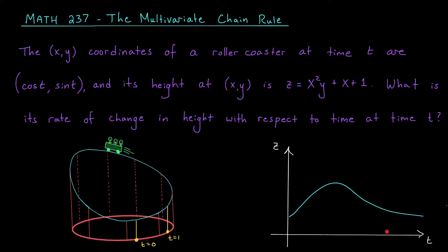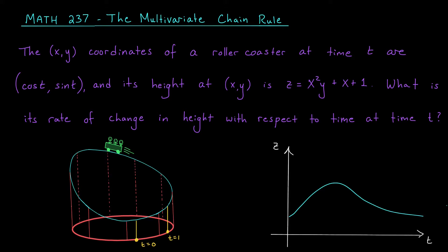The height of the coaster changes over time. But how can we calculate the derivative of z with respect to t if z is currently expressed in terms of just x and y? It turns out there are a couple ways we could approach this problem. One option would be to first substitute the expressions for x and y in terms of t into our height function. Since at time t, x is cos(t) and y is sin(t), we can write z as a function of t explicitly. From here, we can use our usual derivative rules. The downside is that we end up with a product of functions of t, and so we're kind of forced to apply the product rule.